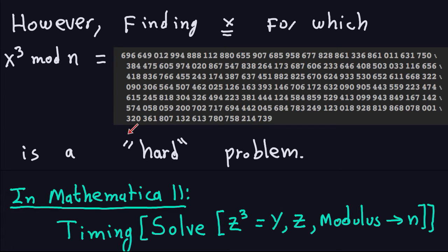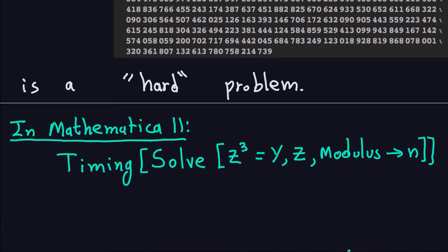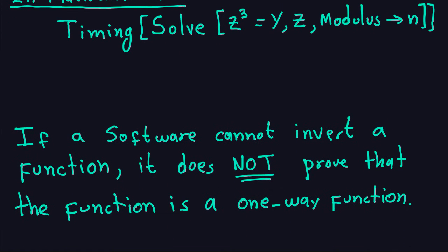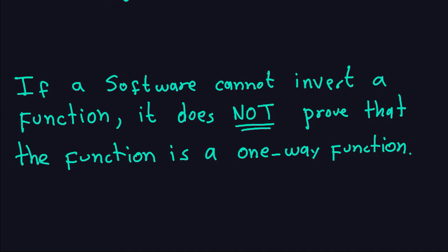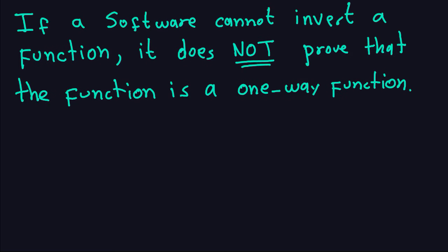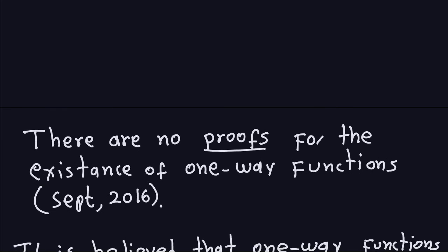That is not a proof, and I want to emphasize that. If software cannot invert a function, it does not prove that the function is a one-way function. What I did does not prove that the function I showed you is a one-way function — it just gives evidence that it might possibly be a one-way function. In fact, there are no proofs for the existence of one-way functions as of September 2016.